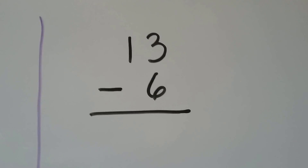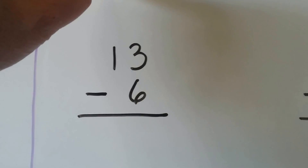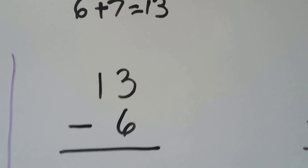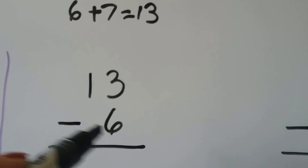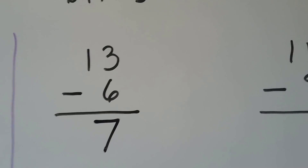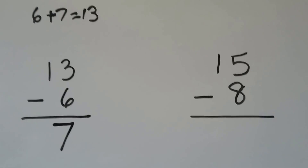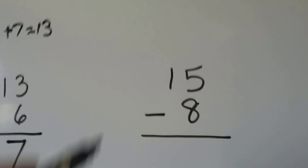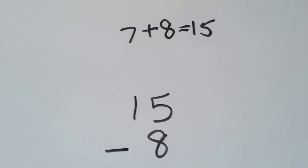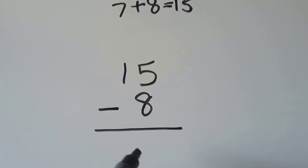13 minus 6. We could use a related addition fact. If we know that 6 plus 7 is equal to 13, then we know 13 minus 6 is equal to 7. 15 minus 8 — if we know that 7 plus 8 is equal to 15, then we know 15 minus 8 is equal to 7.